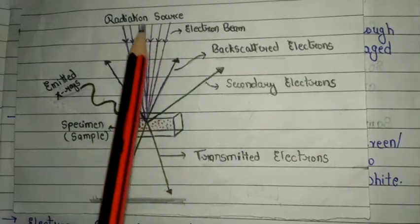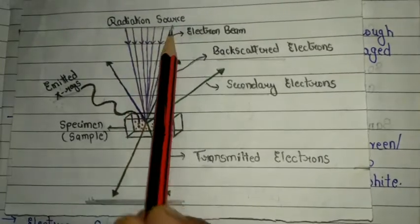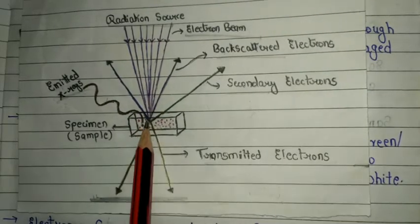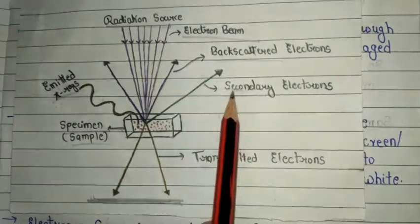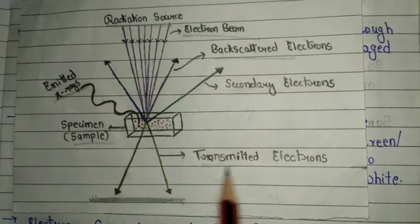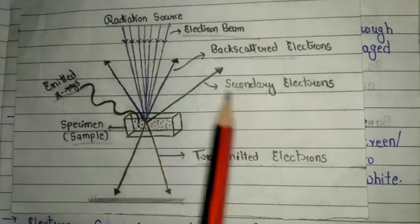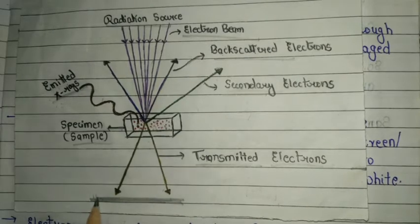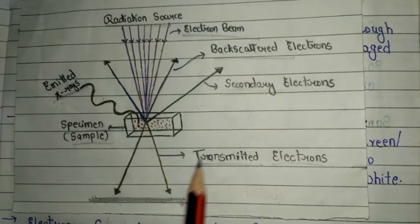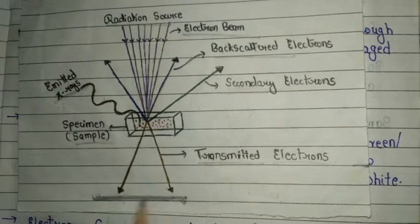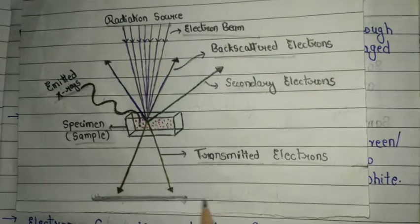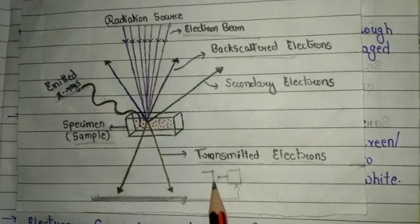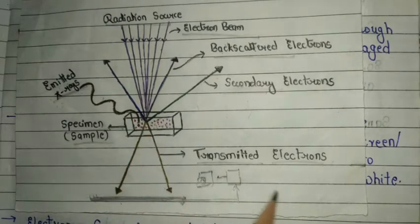Looking at the principle diagram: we use an electron beam as the radiation source. When this electron beam strikes the sample or specimen, three kinds of signals are produced — secondary electrons, backscattered electrons, X-rays, and transmitted electrons. In TEM, we get our image through the fluorescence screen: when transmitted electrons strike the screen plate, a signal is generated, sent to the CPU, and displayed as an image on the monitor.